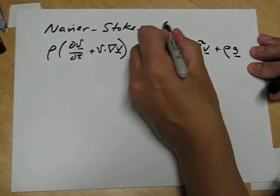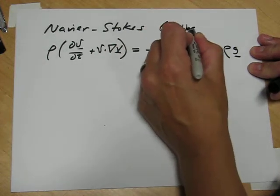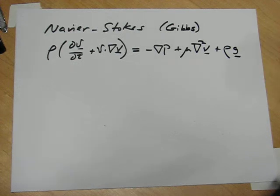This is written in Gibbs notation, and it helps us to see the structure of the problem. If we want to actually solve the problem,